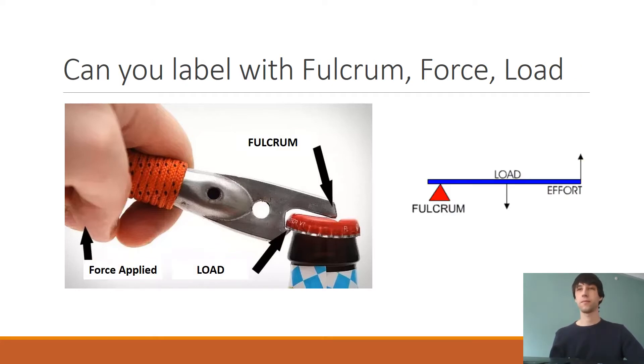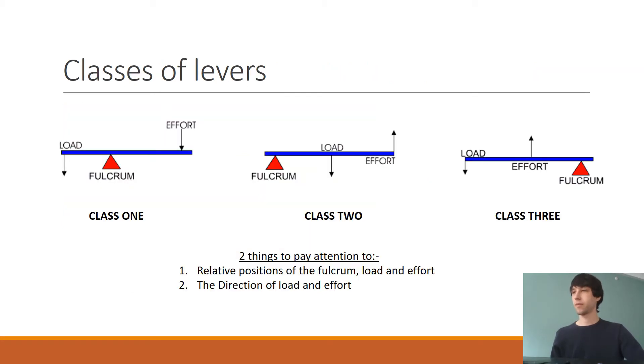Notice that the fulcrum is towards one side followed by load and the end force. You would notice that this is very different from what you were talking about earlier where the fulcrum is in the middle. So does this mean it is a different type of lever? Well, yes. In fact, depending on the relative positions of the three elements and the directions, you can say that there are three classes of levers. All you really need to pay attention to is the relative positions.